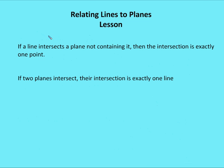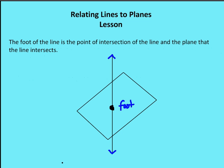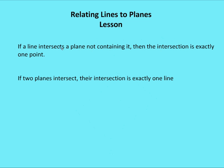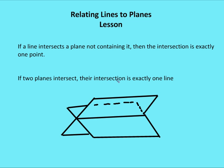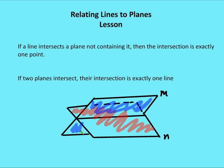If a line intersects a plane not containing it — meaning the line is not completely on the plane — then the intersection is exactly one point, which we call a foot. And if two planes intersect, their intersection is exactly one line. You can see this in the diagram with plane M and plane N: where they meet, the intersection is one line.